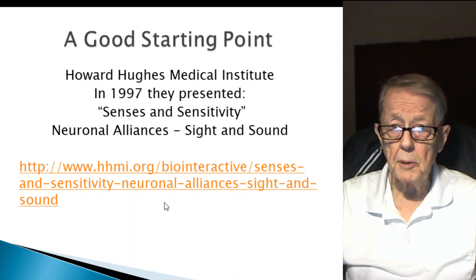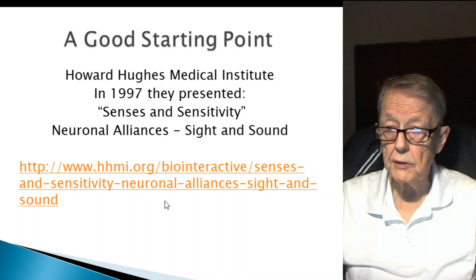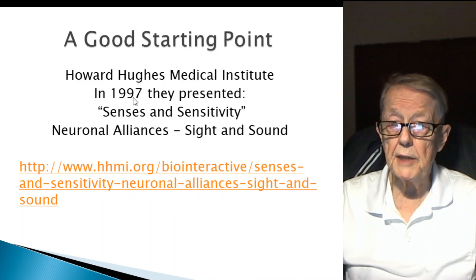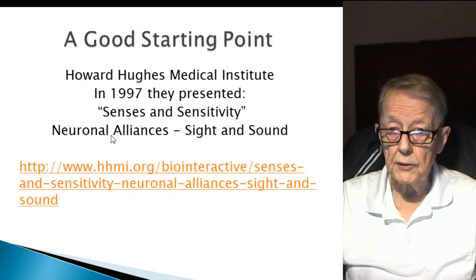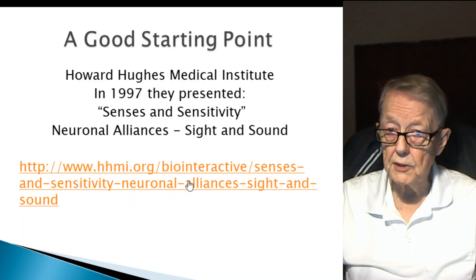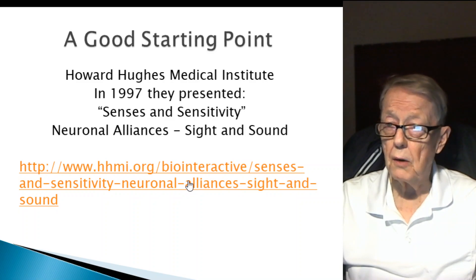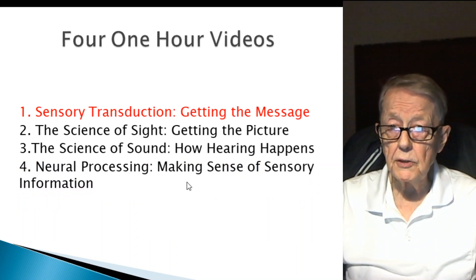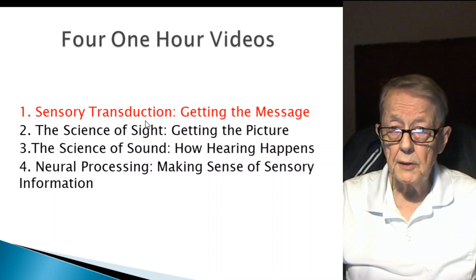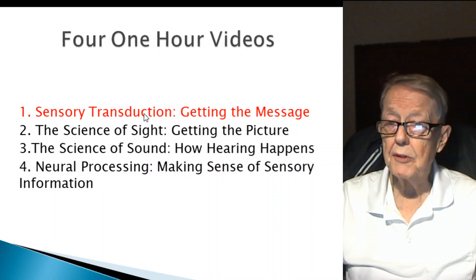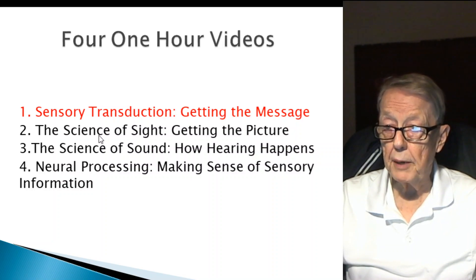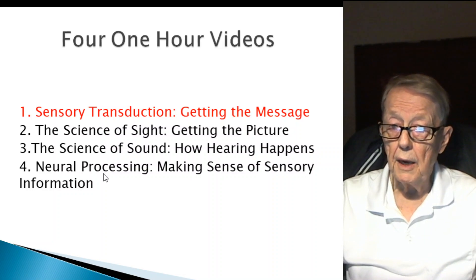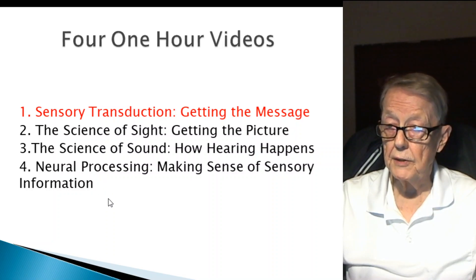Here is a good starting point. I recommend this video — actually a series of four videos put out in 1997 by the Howard Hughes Medical Institute. The title is Senses and Sensitivity of Neural Alliances about Sight and Sound. One link gets you to all four videos, each one hour long, so they're quite extensive but very informative. Today's video will be discussing the first one, Sensory Transduction, titled Getting the Message. Then there's the science of sight, getting the picture; the science of sound, how hearing happens; and neural processing, making sense of the sensory information.